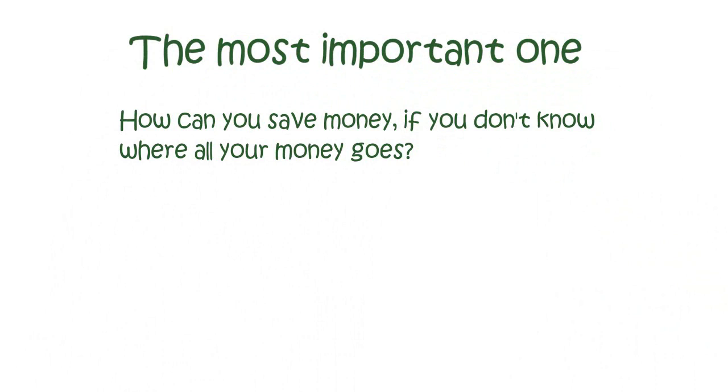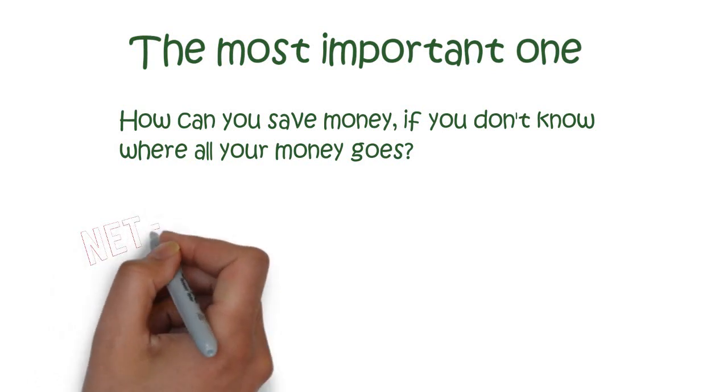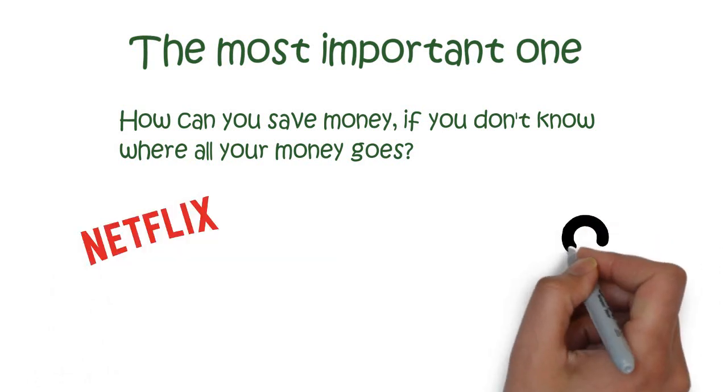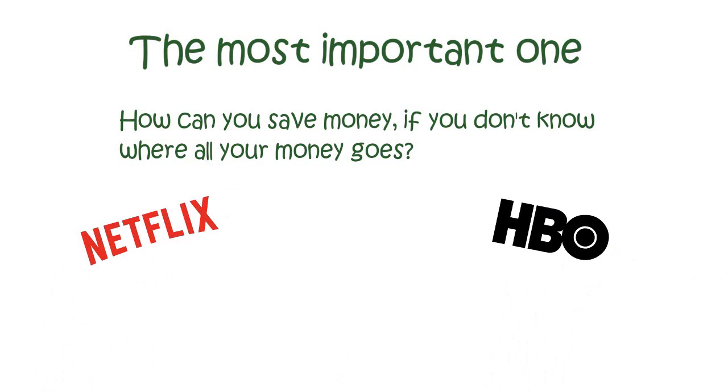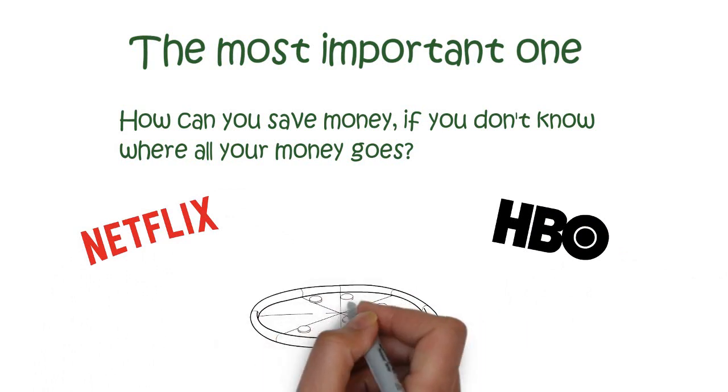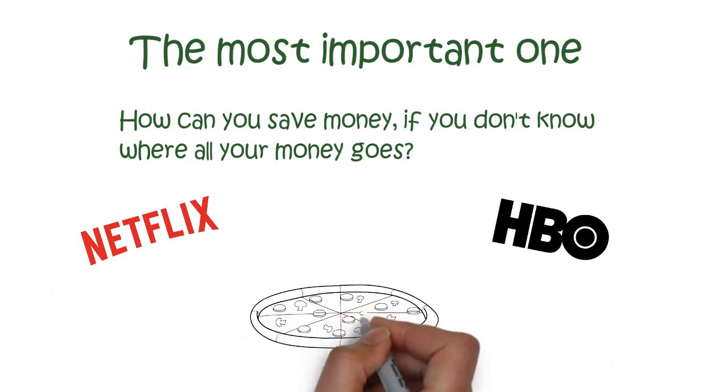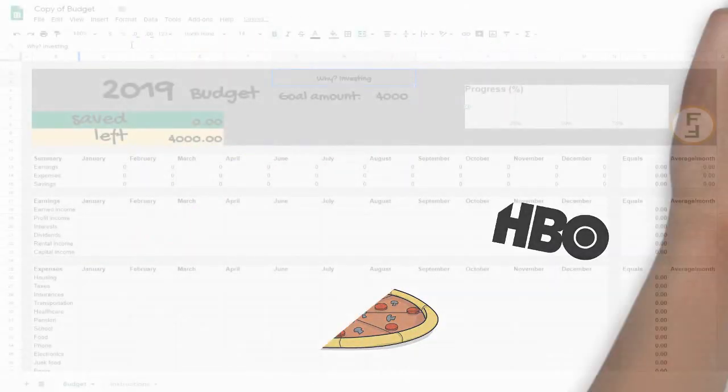But when you track your expenses, you might be surprised how much you spend on useless things. For example, you might pay monthly fees for services that you don't even use. This also makes spending concrete. You might already know that you spend a lot of money on lunch for example, but when you actually see that you spent 1500 on it, it makes you think, is it really worth it?